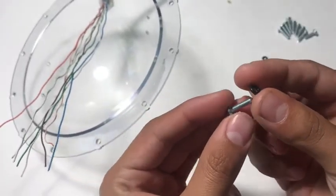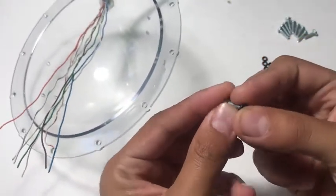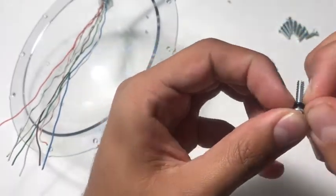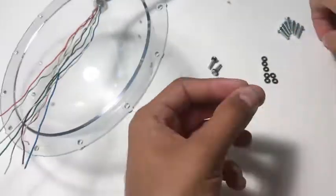For each of the 10 machine screws we're going to take our O-ring and work it onto the screw until it's flush against the head. And then we'll repeat this for the other 9 screws.